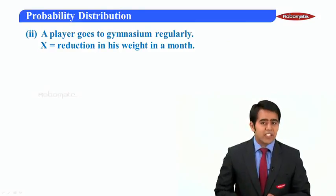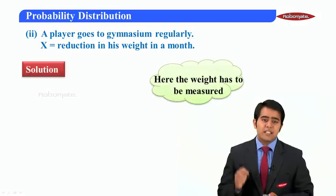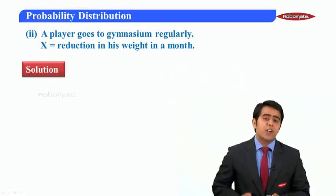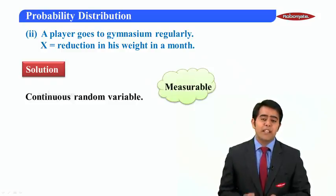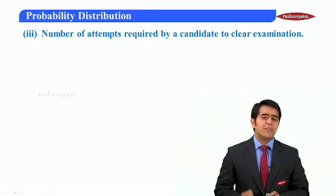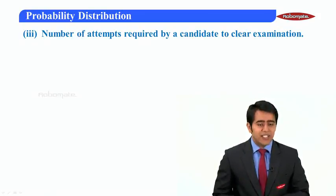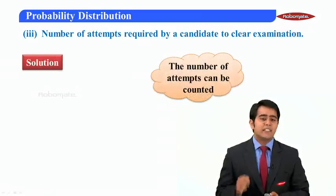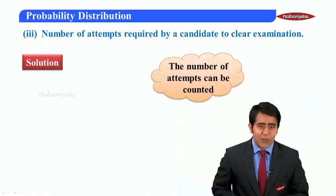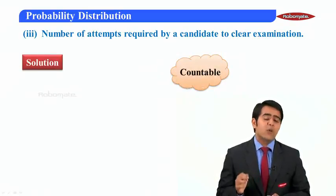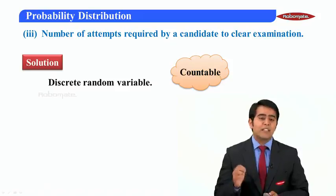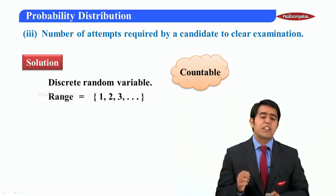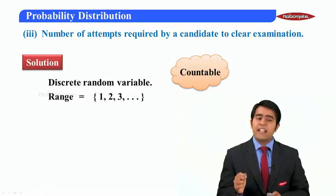Question two: a player goes to gymnasium regularly; x is the reduction in his weight in a month. Weight has to be measured, so it is a measurable quantity - therefore it is a continuous random variable. Question three: number of attempts required by a candidate to clear an examination. The number of attempts can be counted, so it is a discrete random variable with range {1, 2, 3, ...}, which will always be a finite set.